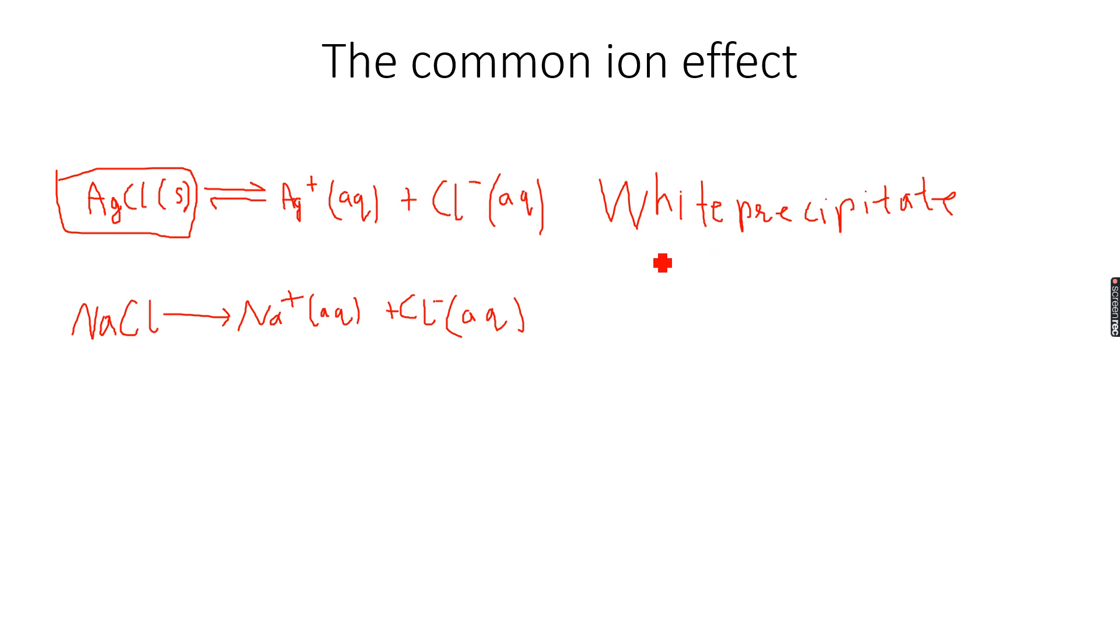So from our saturated solution, now we will have a white precipitate in the solution because more of AgCl solid will be formed. This is called the common ion effect because both these solutions have the Cl negative ion in common. One is the solution of a sparingly soluble salt and one is the solution of a soluble salt.